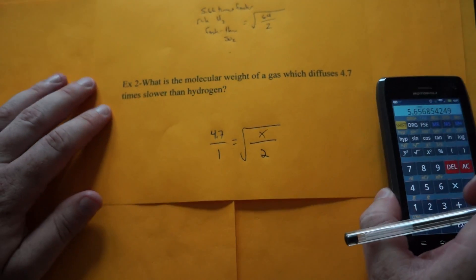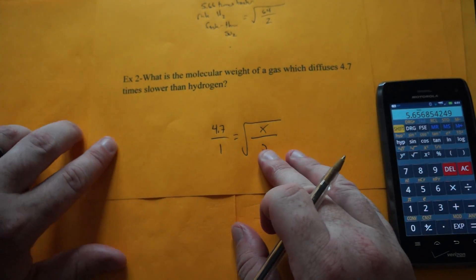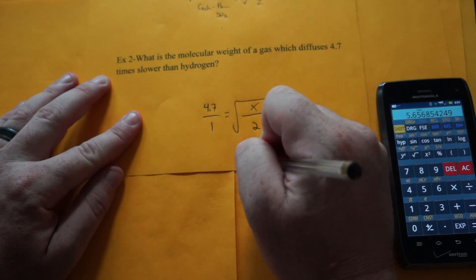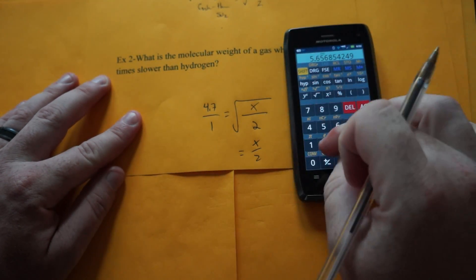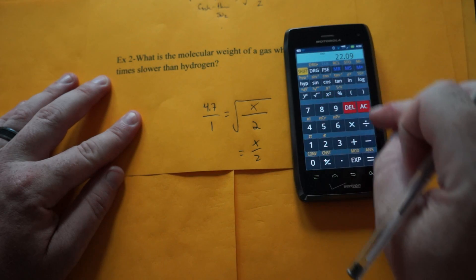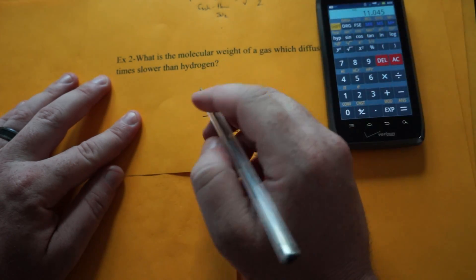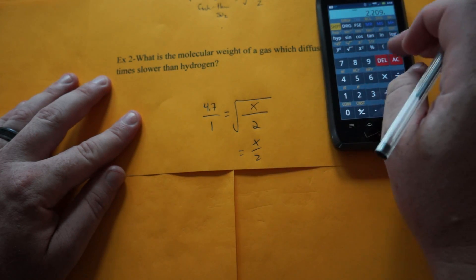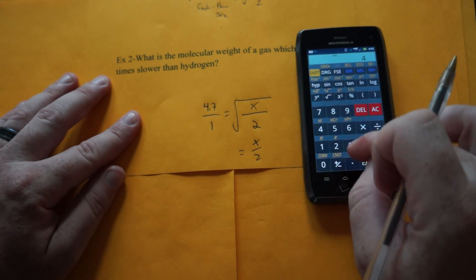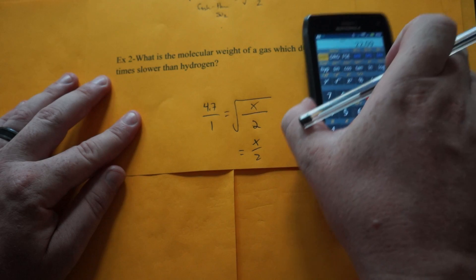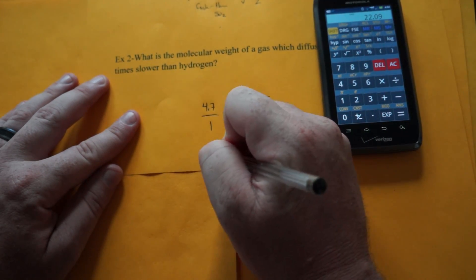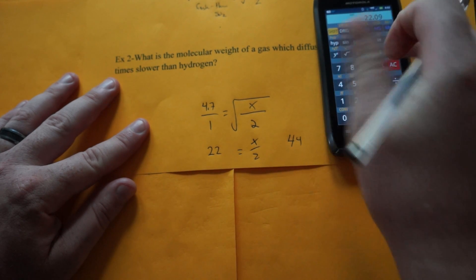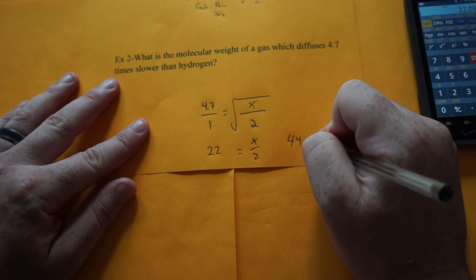So in order to solve for x in the square root, we have to square the other side. So we're going to get x over 2 is equal to 4.7 squared, and that's 4.7 squared, 22. And then we just cross-multiply, and we get x is equal to 44 grams per mole.